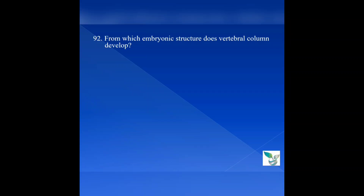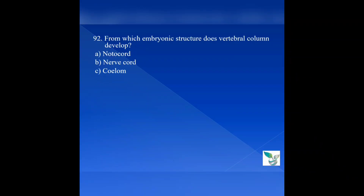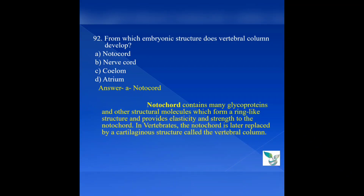Question number 92: From which embryonic structure does the vertebral column develop? Option A: notochord. Option B: nerve cord. Option C: coelom. Option D: atrium. The answer is option A, notochord. The notochord contains many glycoproteins and other structural molecules which form a ring-like structure providing elasticity and strength. In vertebrates, the notochord is later replaced by a cartilaginous structure called the vertebral column.